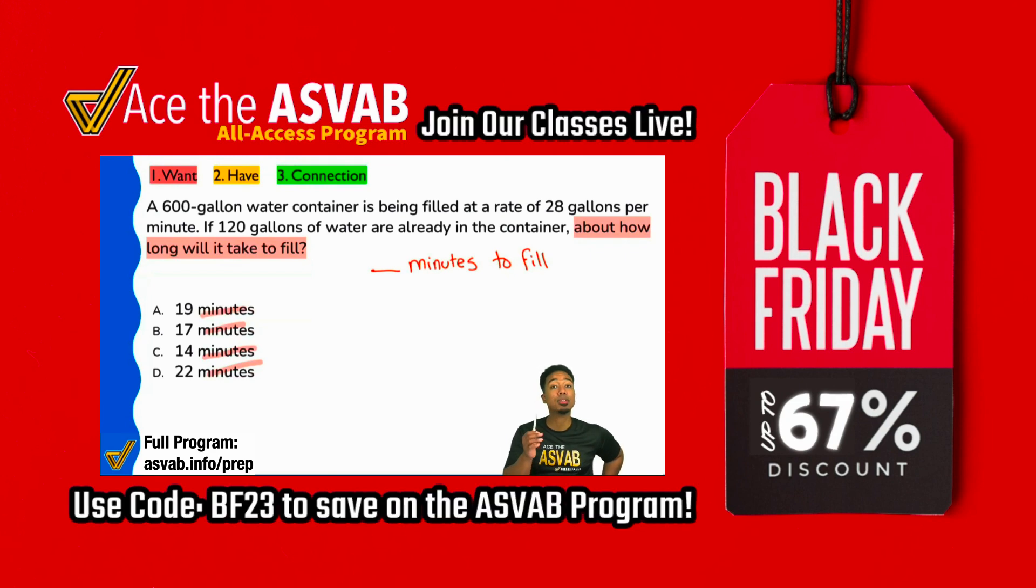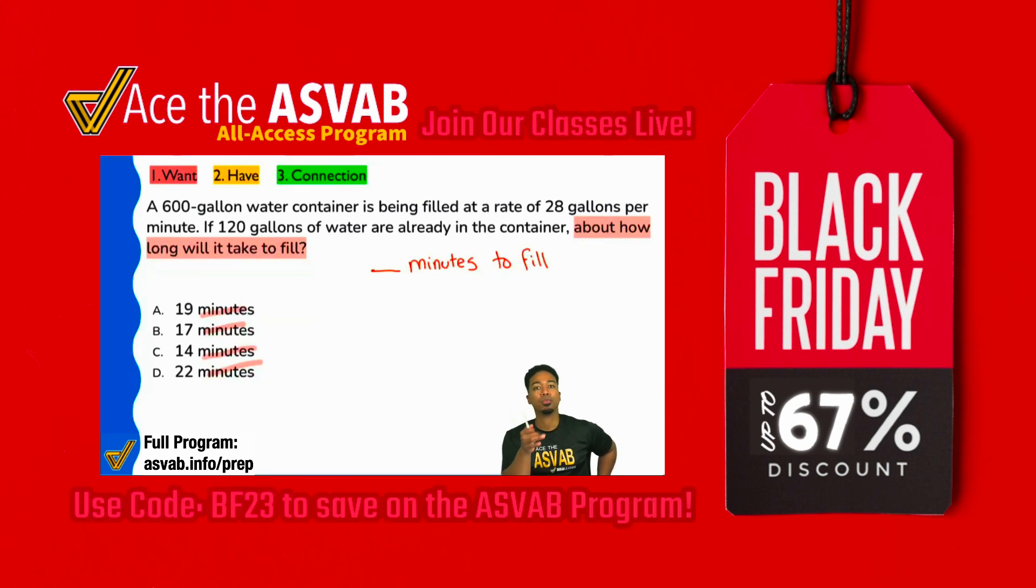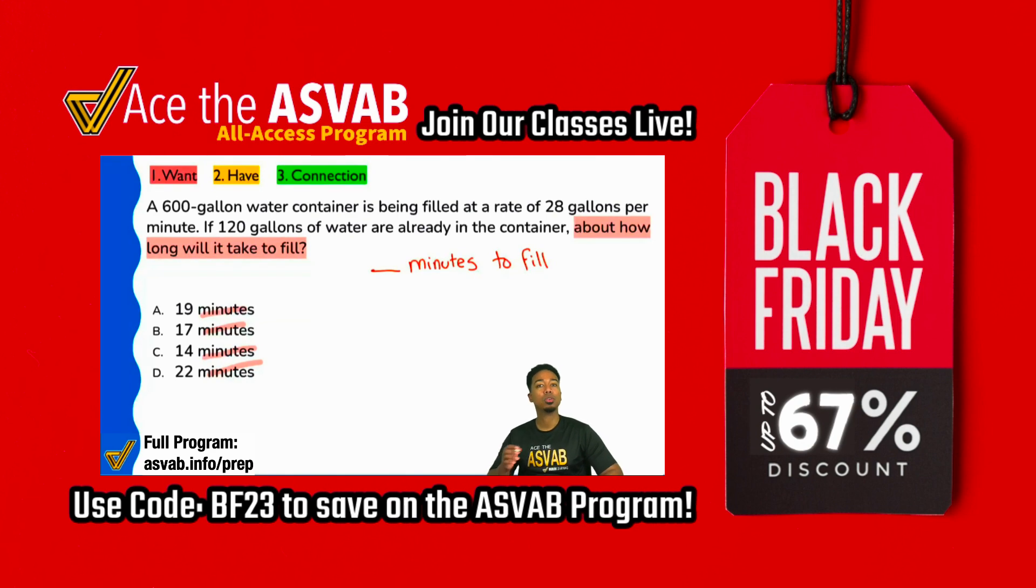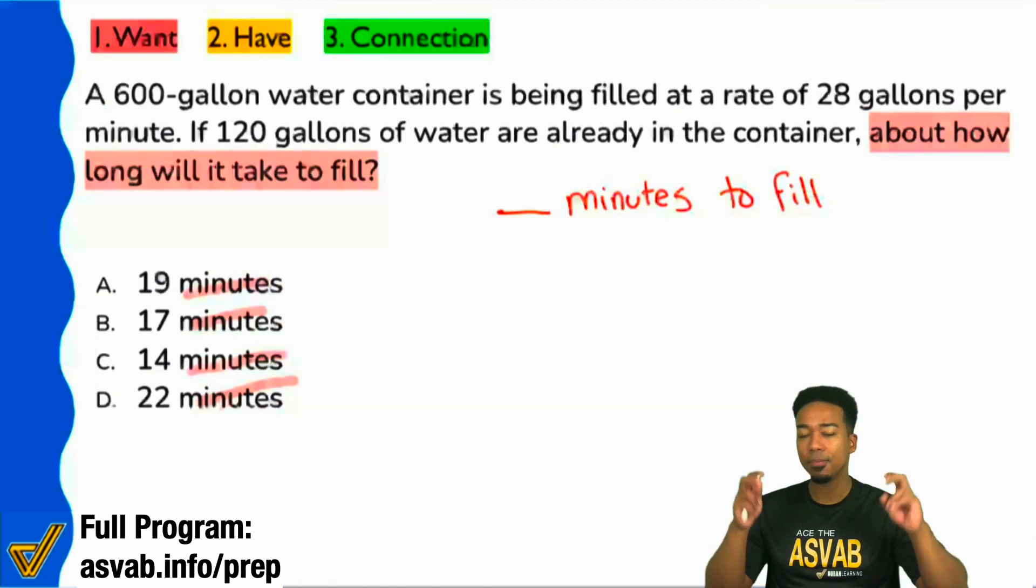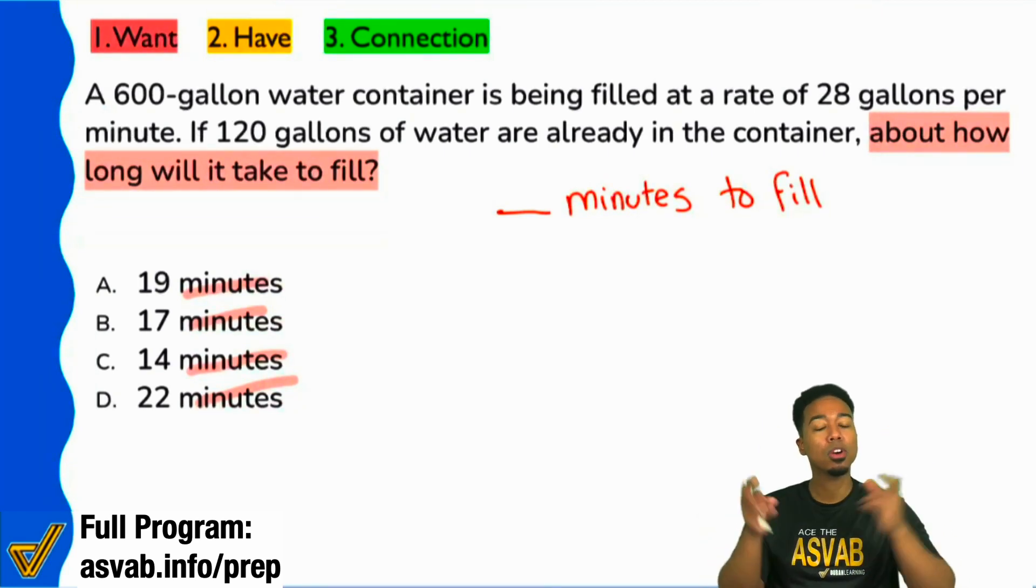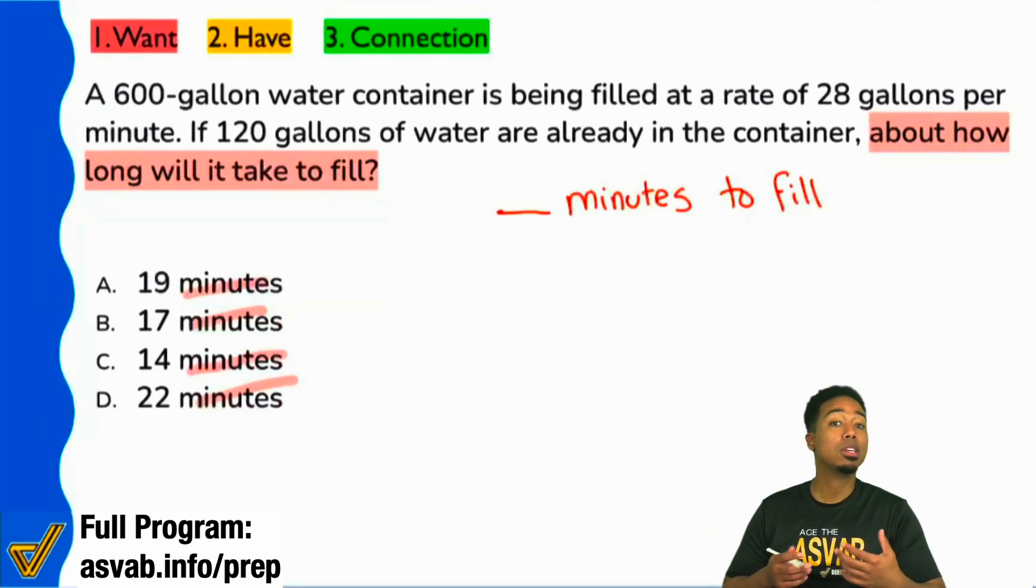Again, keep it simple. Then go through your progression. Start with the question to understand your goal. Then we're going to move to the information. So what information do we have? Well, you want to start off with that same exact sentence.